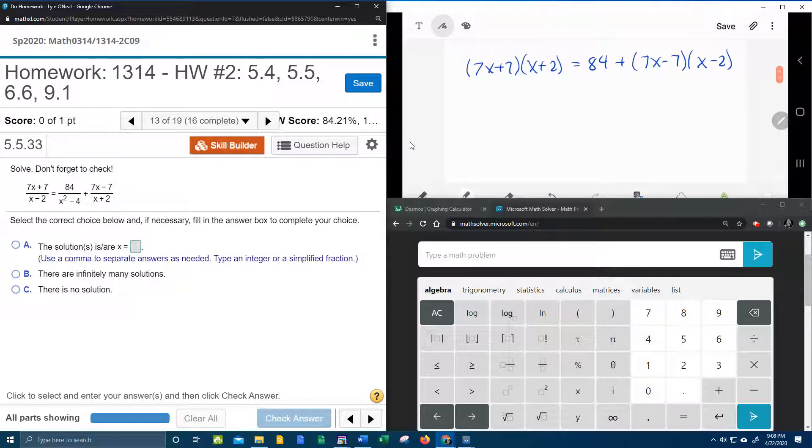And then we're going to need to FOIL, looks like we're going to need to FOIL twice, and then solve this equation for x. Here we go, let's get started. 7x times x gives me a 7x squared. On the outside, 7x times 2, that is 14x. On the inside, plus 7x. Last but not least, plus 14 equals 84 plus, and then here we go, doing the FOIL method again. 7x times x, 7x squared. On the outside, 2 times 7 is 14x. On the inside, minus 7x. Last but not least, plus 14.